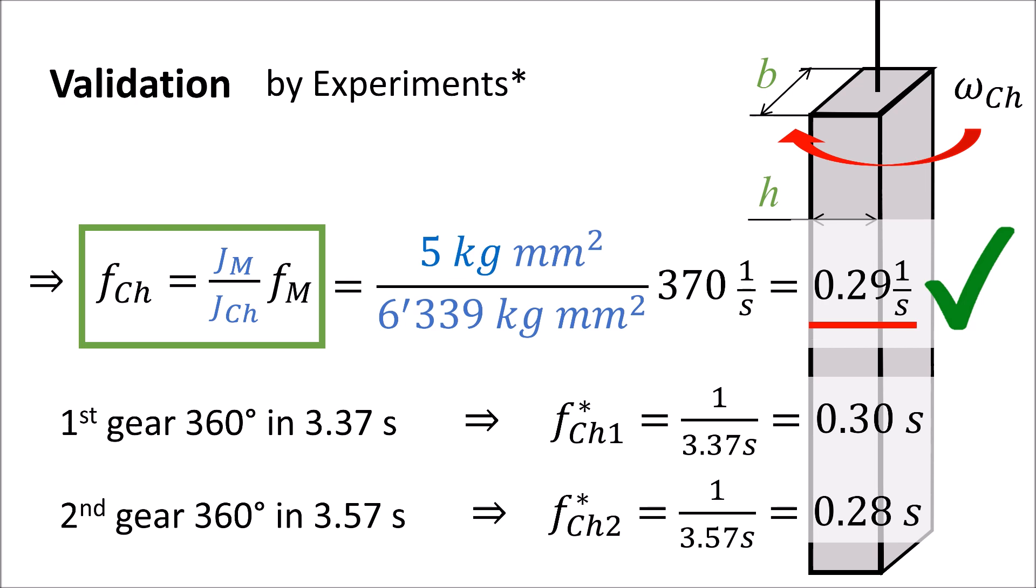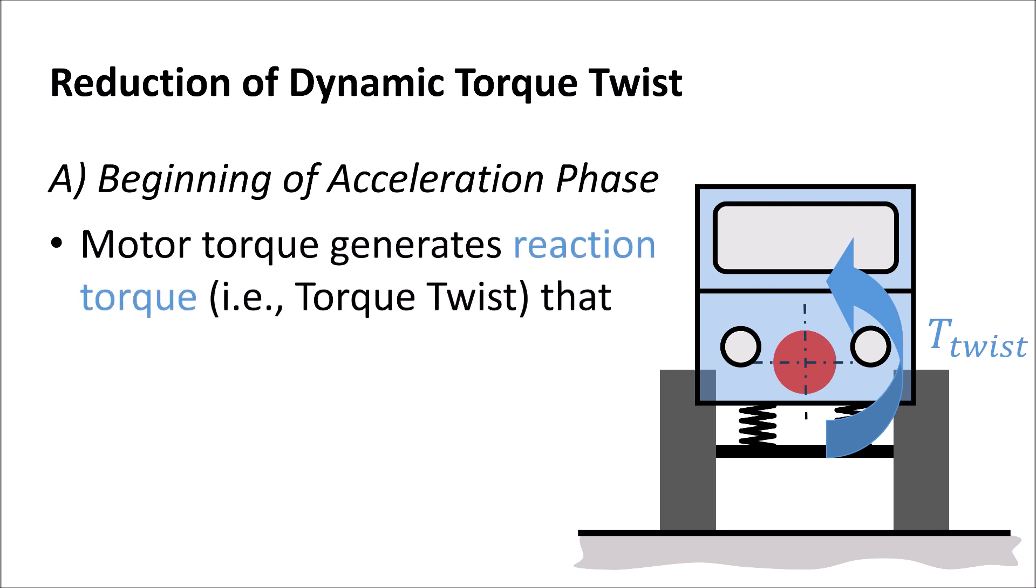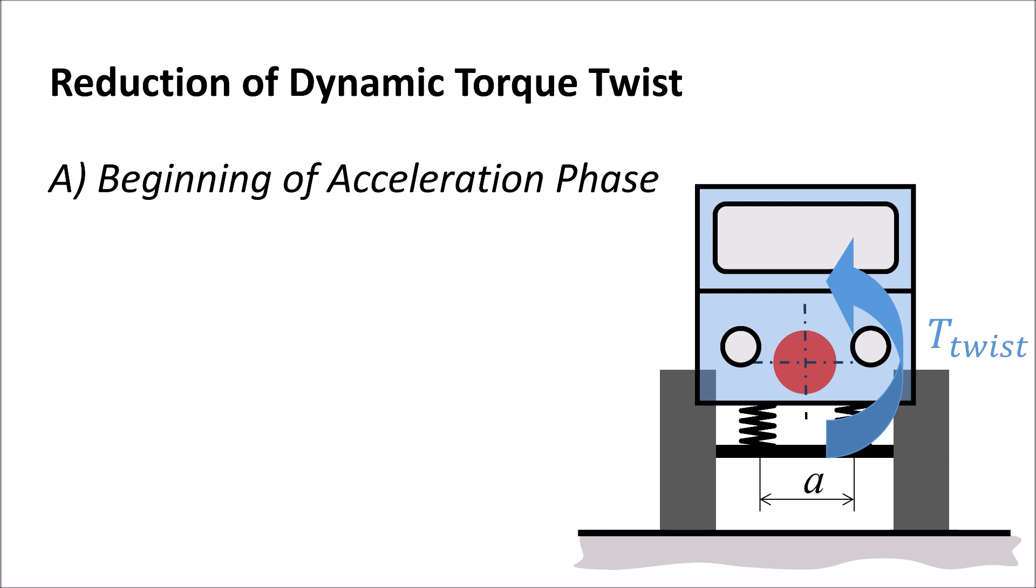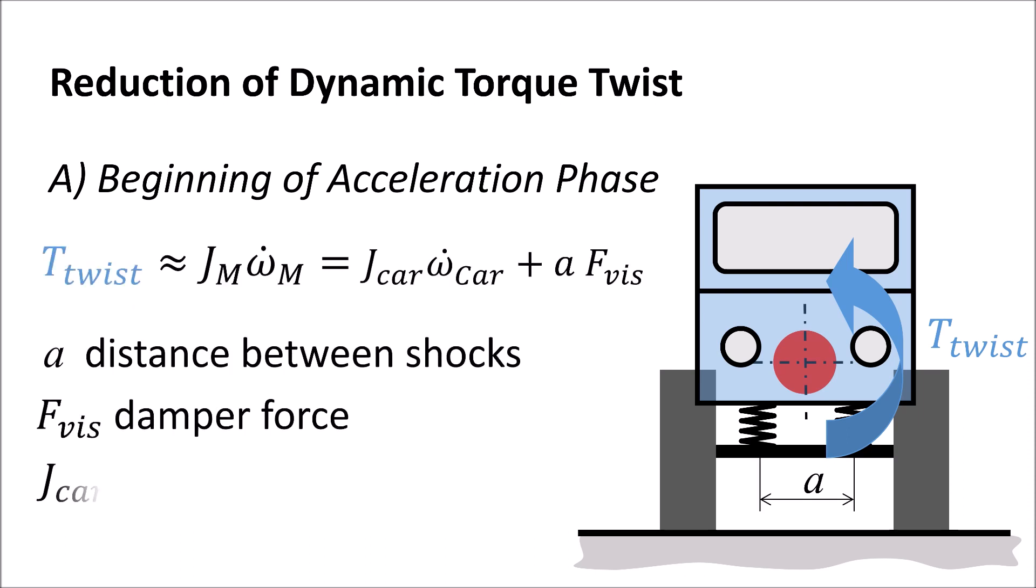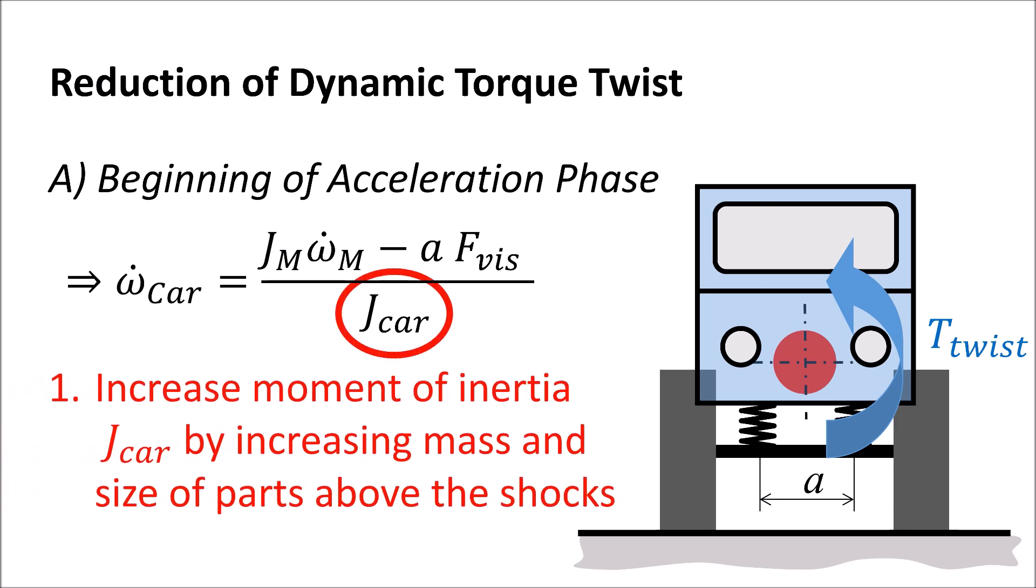To minimize the amount of dynamic torque twist we have to distinguish two different phases. Phase A is the beginning of the motor acceleration when the car just starts to tilt. This tilting movement is against the car's inertia and viscose forces coming from the shocks and can be expressed by an equation. Based on this equation we can analyze how to change the parameters in order to minimize torque twist.